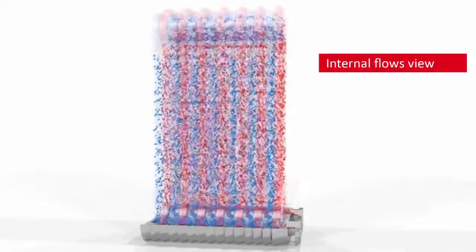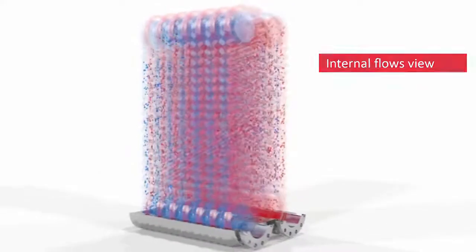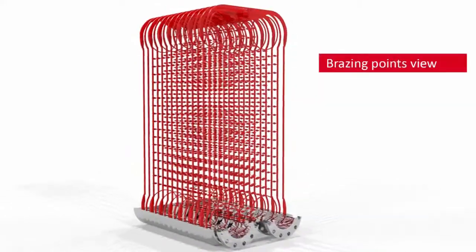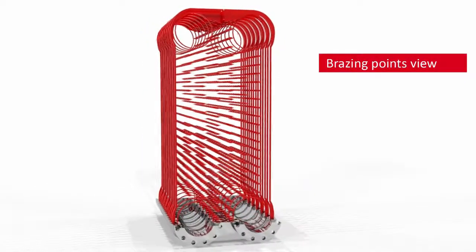If we could look inside a BPHE, we would see the numerous brazing points that hold the unit together. Brazing the plates together means there is no need for rubber gaskets. This prevents leakage and ensures low maintenance costs.